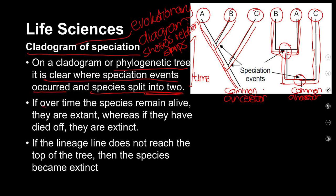Over time, if species remain alive they are extant — extant means they are still in existence. All of these species still reach present time, so they are extant. Whereas if a species' branch only goes up to a certain point and doesn't reach current time, we would say they have become extinct — they have died out. If the lineage line does not reach the top of the tree, the species became extinct.